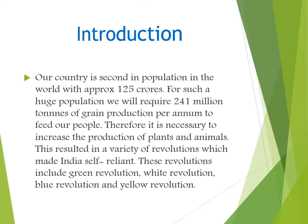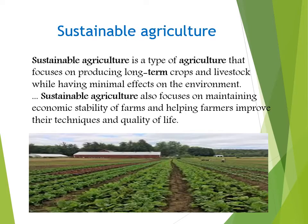We will now see what sustainable agriculture is. Sustainable agriculture is a type of agriculture that focuses on producing long-term crops and livelihoods while having minimal effects on the environment. It also focuses on maintaining economic stability of farms and helping farmers improve their techniques and quality of life. With increased human population, natural resources such as land, soil, and water are being overexploited for food, shelter, and urbanization. All these human activities have degraded our environment and caused many problems such as floods, drought, and ozone depletion. Thus, it has become very important that we should increase food production without degrading our environment.